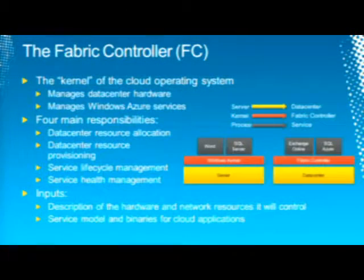The fabric controller stores the application in its own repository and then deploys it to the blades. The fabric controller is really the kernel of the cloud operating system — this is the team I work on in Windows Azure. It defines the Windows Azure application model — the structure of the XML, the structure of an application. It deploys and manages the lifecycle of the application, and also manages the data center hardware. It's very much like the Windows kernel, which defines what a Windows process is and also manages hardware on the local machine.